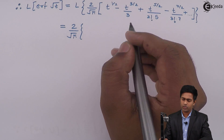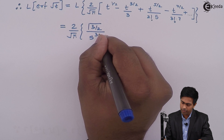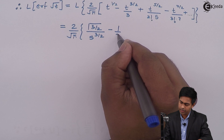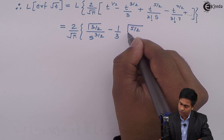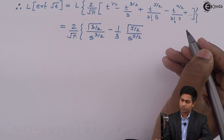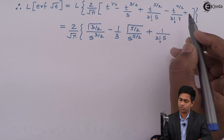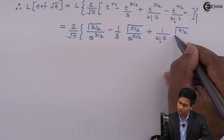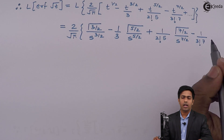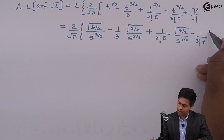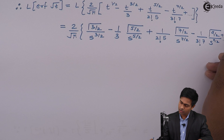For the first term n = 1/2: L{t^(1/2)} = Γ(3/2) / s^(3/2). Minus (1/3) × L{t^(3/2)} = Γ(5/2) / s^(5/2). Plus (1/(2!·5)) × L{t^(5/2)} = Γ(7/2) / s^(7/2). Minus (1/(3!·7)) × L{t^(7/2)} = Γ(9/2) / s^(9/2) + ... So this is the series we got.